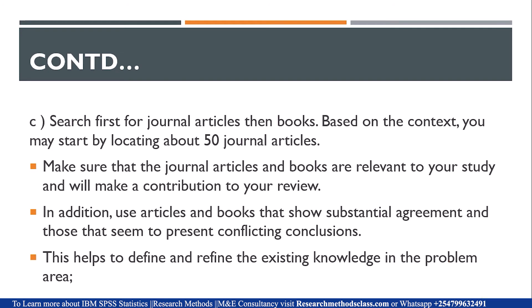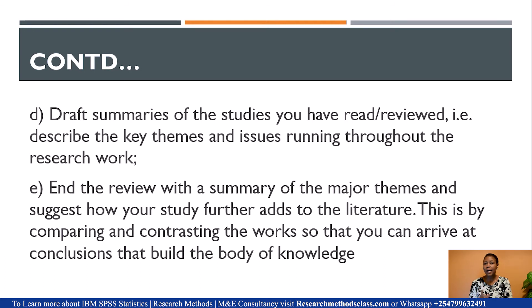Having literature that is in agreement and others that conflict helps you define and refine existing knowledge in the problem area. We have now discussed step three — going and starting your search with journal articles before books. These journal articles must be current. In social science, unless dealing with classical material, the journal article or book should not be more than 10 years old. Step four is to draft summaries of the studies you have read or reviewed, by describing the key themes and issues running throughout the research work.